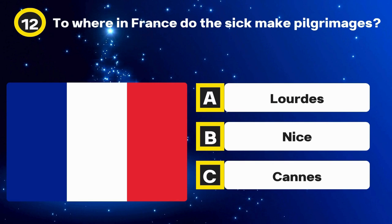Question 30. Who wrote The Man in the Iron Mask? Options: Victor Hugo, Alexandre Dumas, Jules Verne. The answer: Alexandre Dumas.